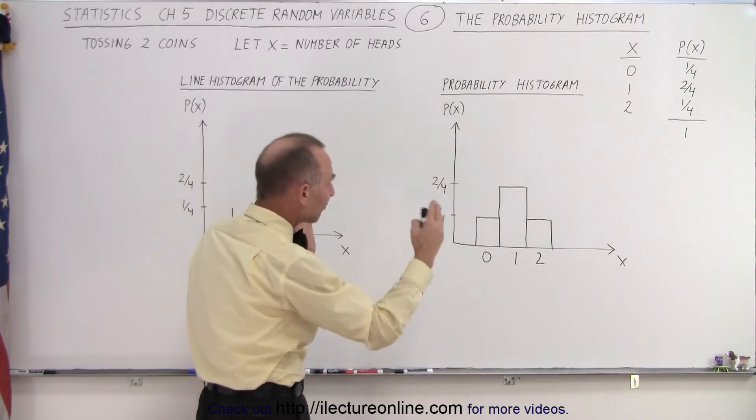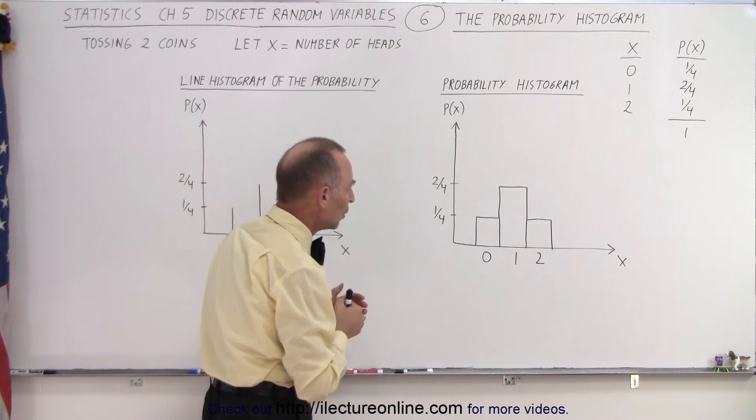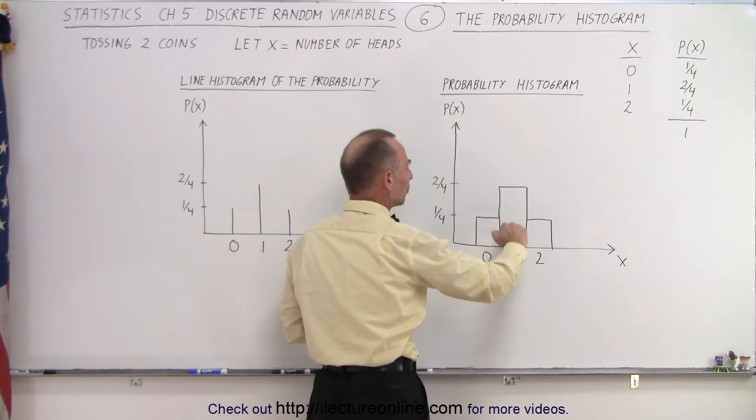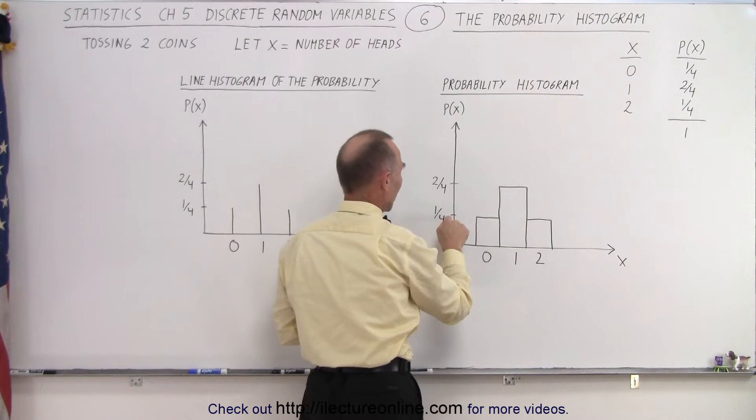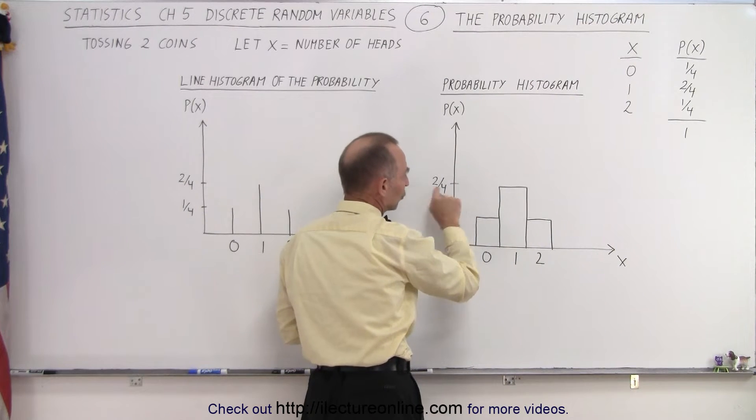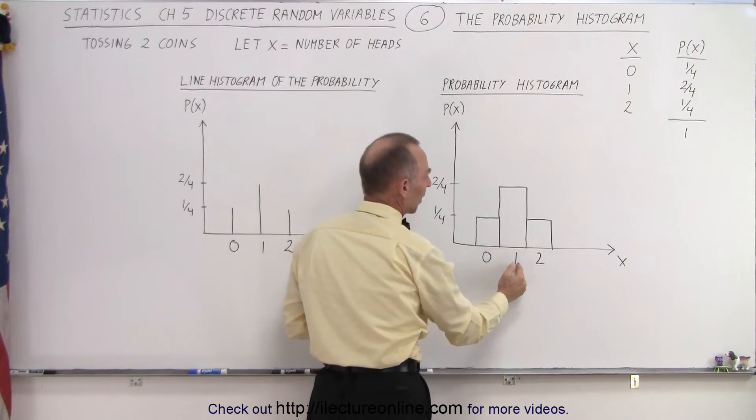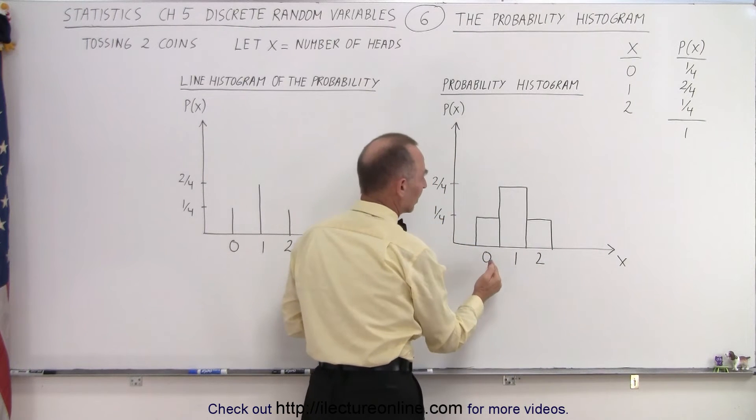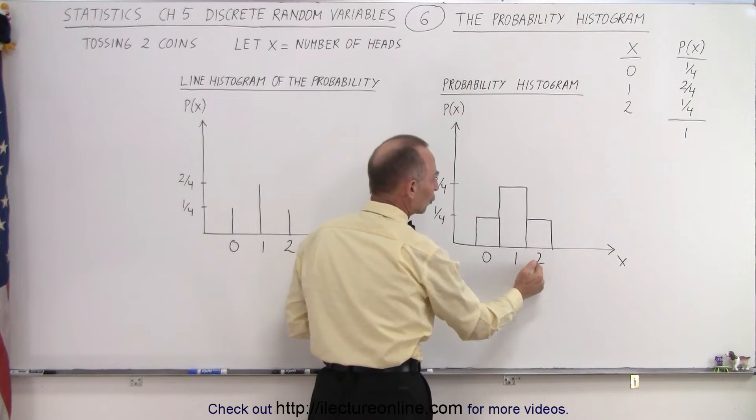We can graph that in what we call a probability histogram. Notice here that the height corresponds to the probability. Here we have one quarter, one half or two quarters, and here we have the three possibilities for the variable x: 0 heads, 1 head, or 2 heads.